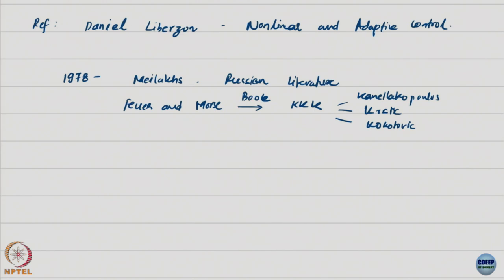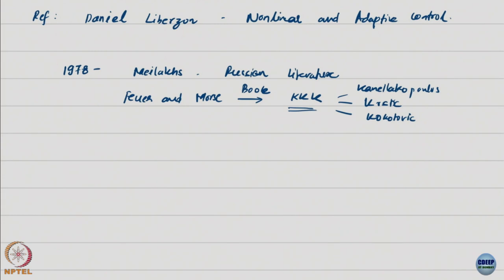I've already mentioned this book by Kanellacopoulos, Kristic, Kokotovic. I usually call it the KKK book. This is one of our standard texts for adaptive control. These are the guys who introduced the terminology backstepping. Sometimes more than the folks who discover it, folks who name the method are way more popular. Coming up with good names is also important.